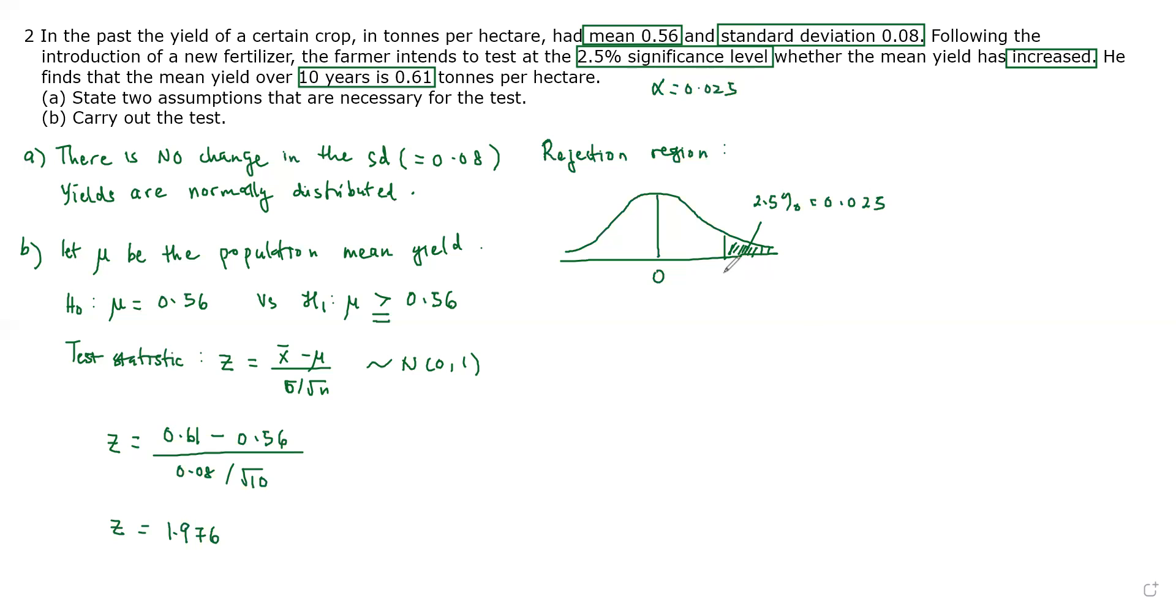Then we can find this exact value from the standard normal table, which will give us the critical value. From the standard normal table, this is 1.96. The decision rule is to reject the null hypothesis if the value of the test statistics is greater than 1.96.